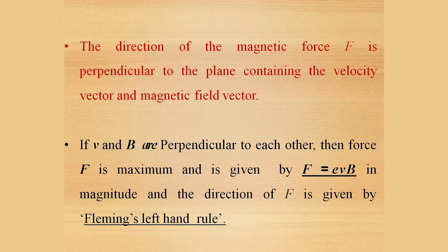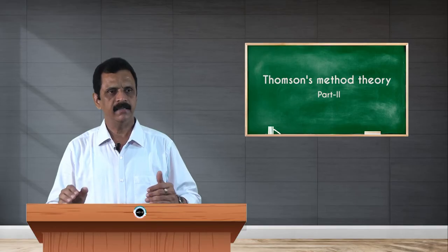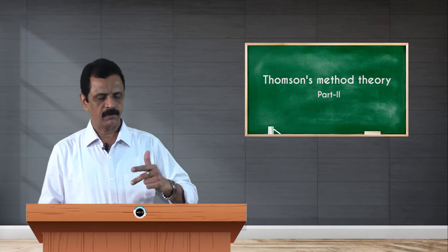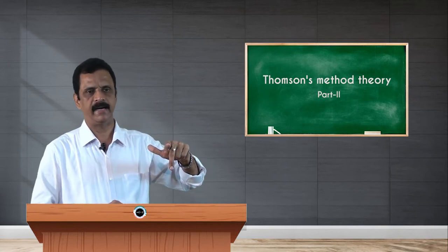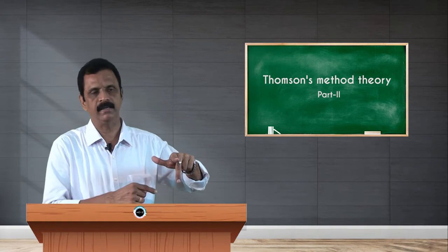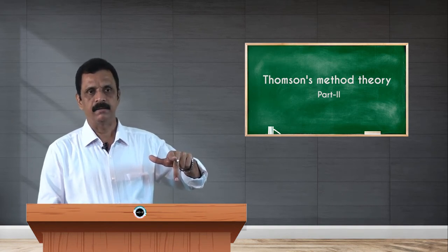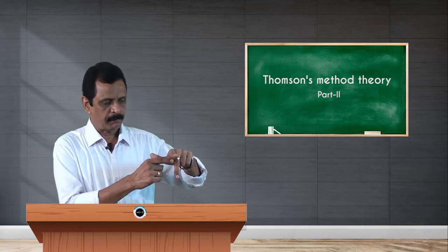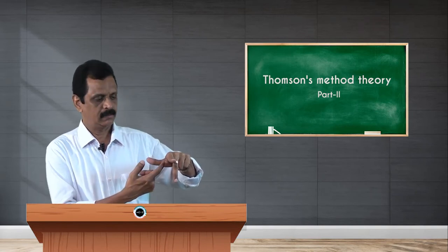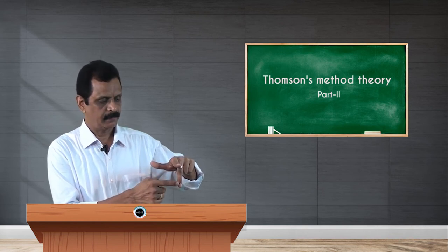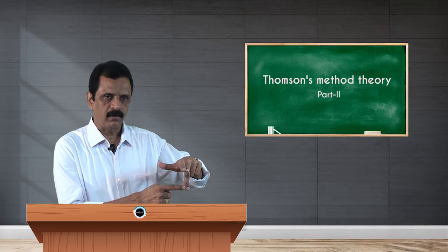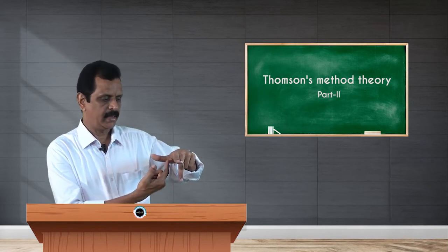This is known as Fleming's left hand rule, which can be explained as follows. If you stretch the first three fingers of your left hand such that the forefinger points in the direction of the magnetic field and the middle finger points in the direction of the velocity of the charged particle, then the magnetic force will be in the direction of the thumb — perpendicular to both the velocity and the magnetic field. So middle finger, forefinger, and thumb give the direction of velocity, magnetic field, and magnetic force respectively.